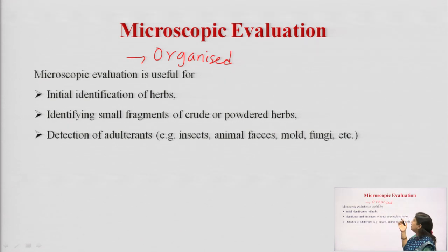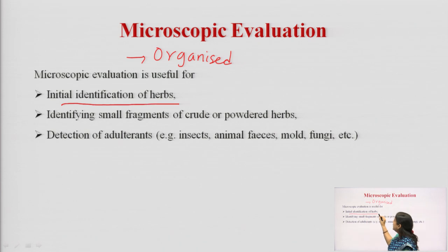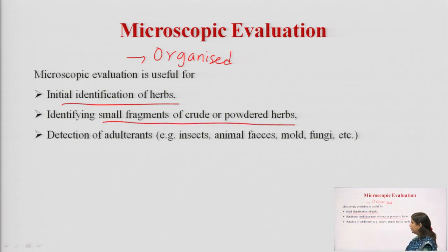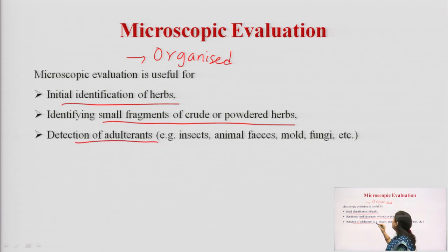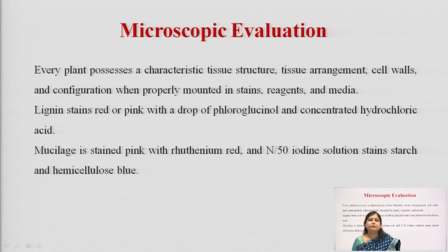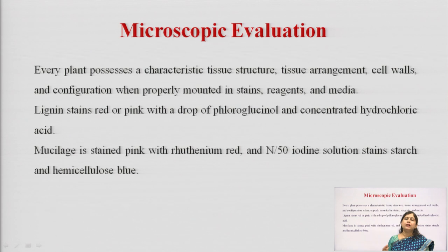Microscopical evaluation is important for the initial identification of drugs or herbs, identifying small fragments of crude or powdered drugs, and even for detection of adulterants like remains of any animal, insects, mold, or fungi. So it helps in increasing the quality control of a particular drug.